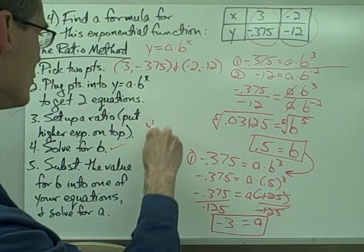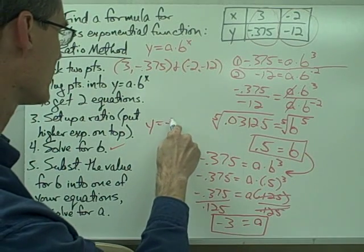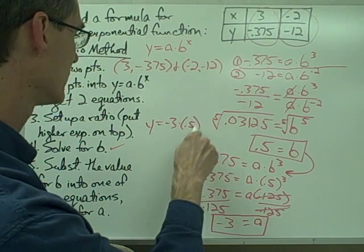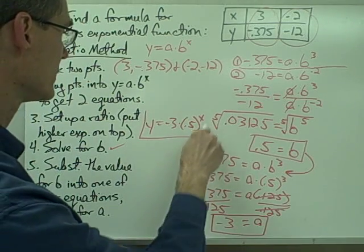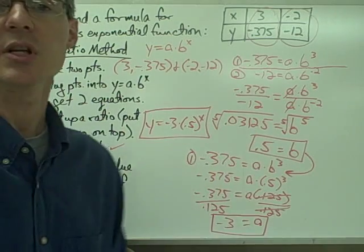So I take both of these values and plug them into y equals a times b to the x. a is negative 3, b is 0.5 to the power of x, and there is the formula for this exponential function.